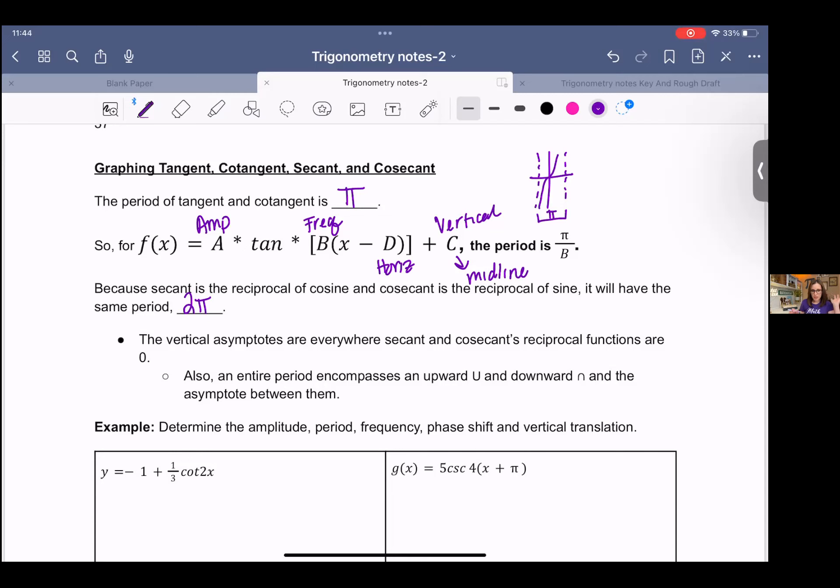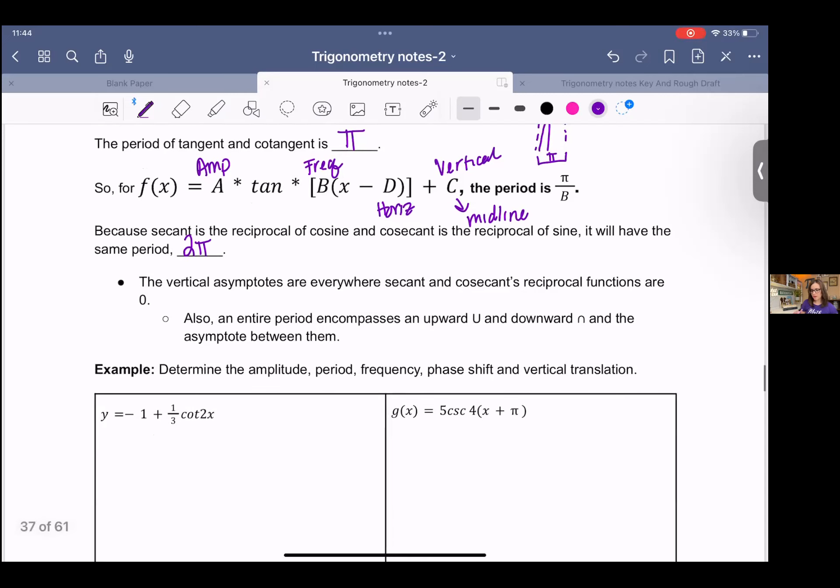Okay, for secant and cosecant, we are going to have some asymptotes because they're the reciprocal function. So if you have 1 over sine or 1 over cosine, where sine or cosine are 0, that's where asymptotes are. So for secant and cosecant, we are going to have asymptotes, but one full wave is going to be an upwards U and a downwards U, just to encompass that full picture. So we do include the asymptotes for those specific cases.